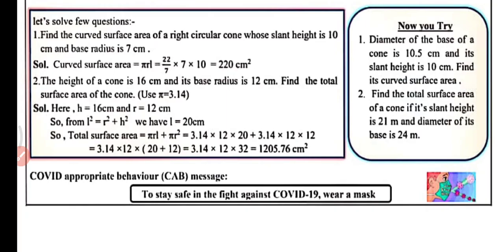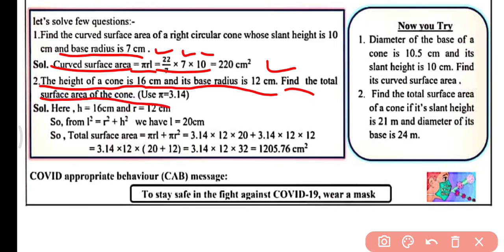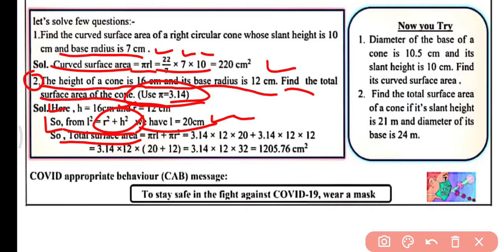Now let's proceed to some problems. Problem 1: Find the curved surface area of a right circular cone whose slant height is 10 cm and base radius is 7 cm. Curved surface area equals πrl, so we put in the values and get 220 cm². Problem 2: The height of a cone is 16 cm and the base radius is 12 cm; find the total surface area using π = 3.14. Using l² = r² + h², we get l = 20 cm. Then total surface area = πrl + πr², which gives 1205.76 cm².